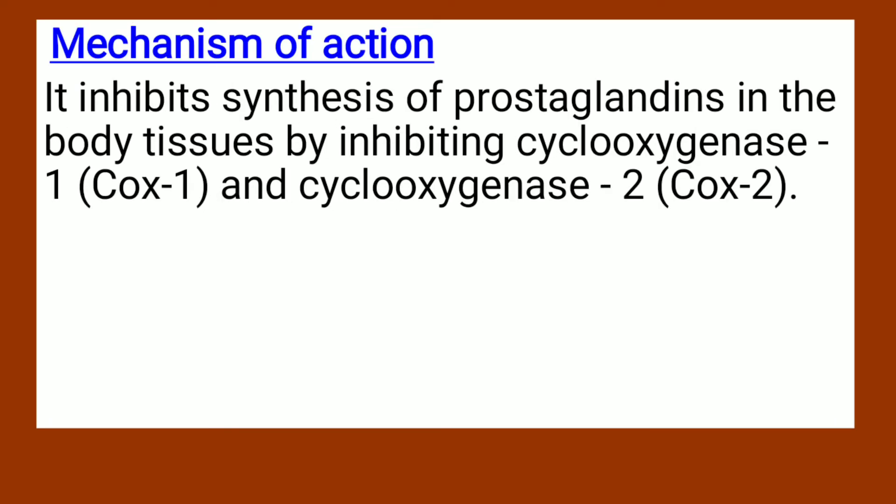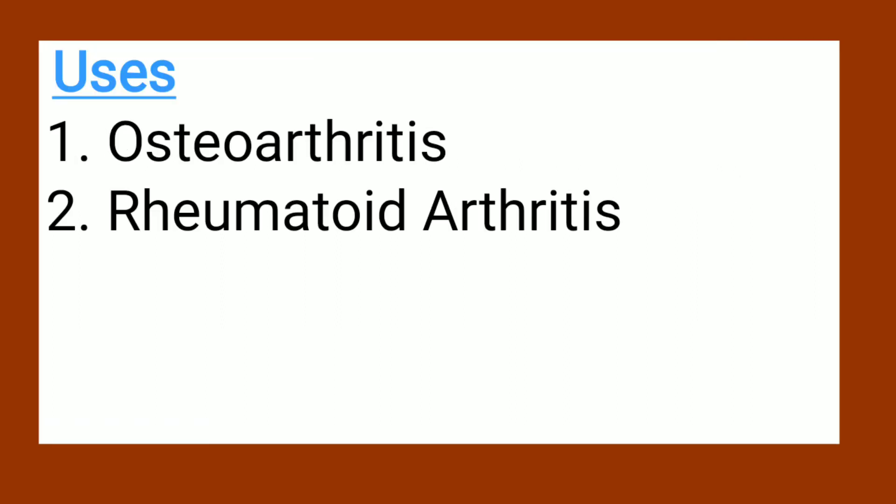Mechanism of action: Piroxicam works by inhibiting the synthesis of prostaglandins in the body tissue by inhibiting cyclooxygenase-1, which can be abbreviated as COX-1, and cyclooxygenase-2, which can be abbreviated as COX-2.